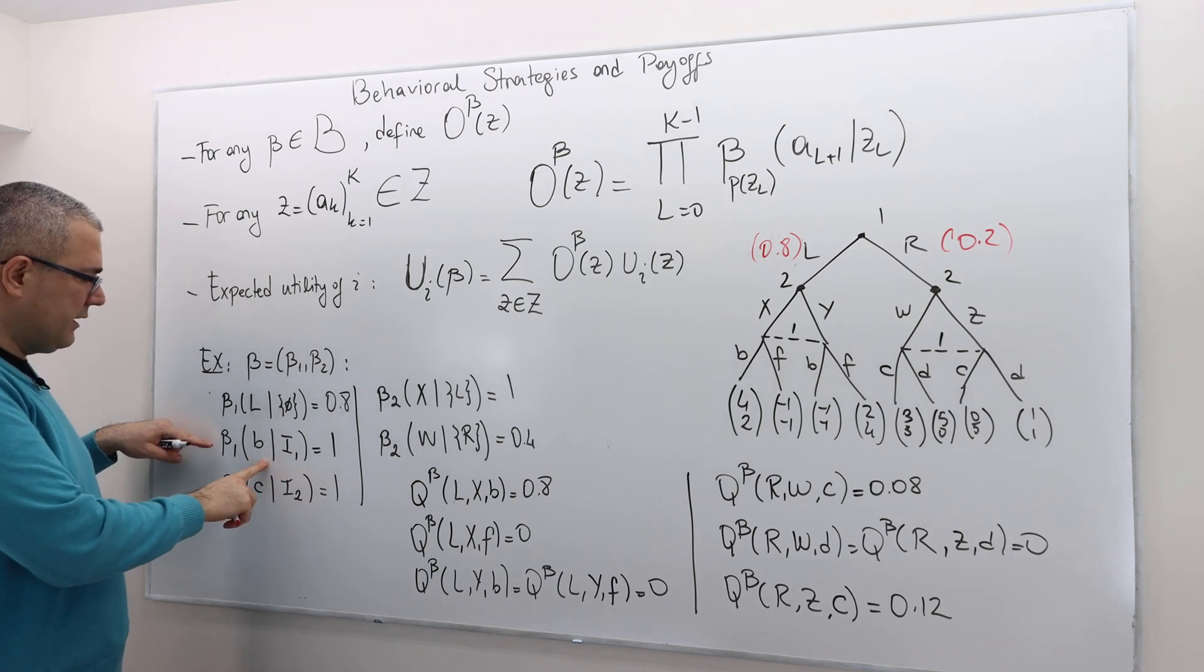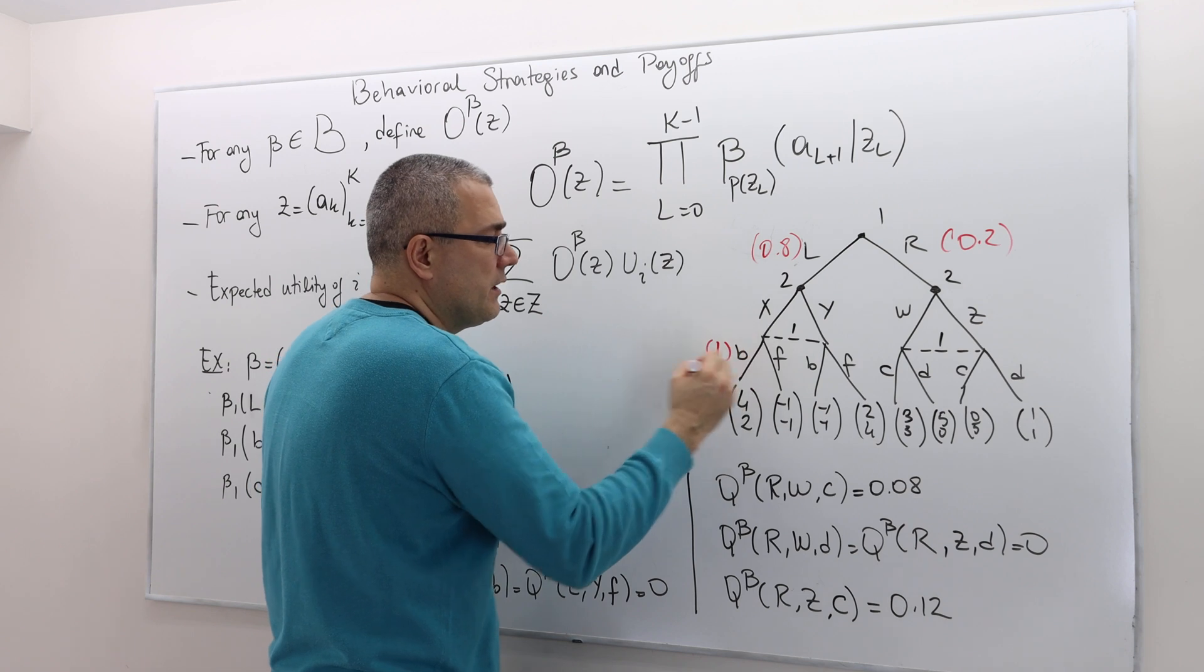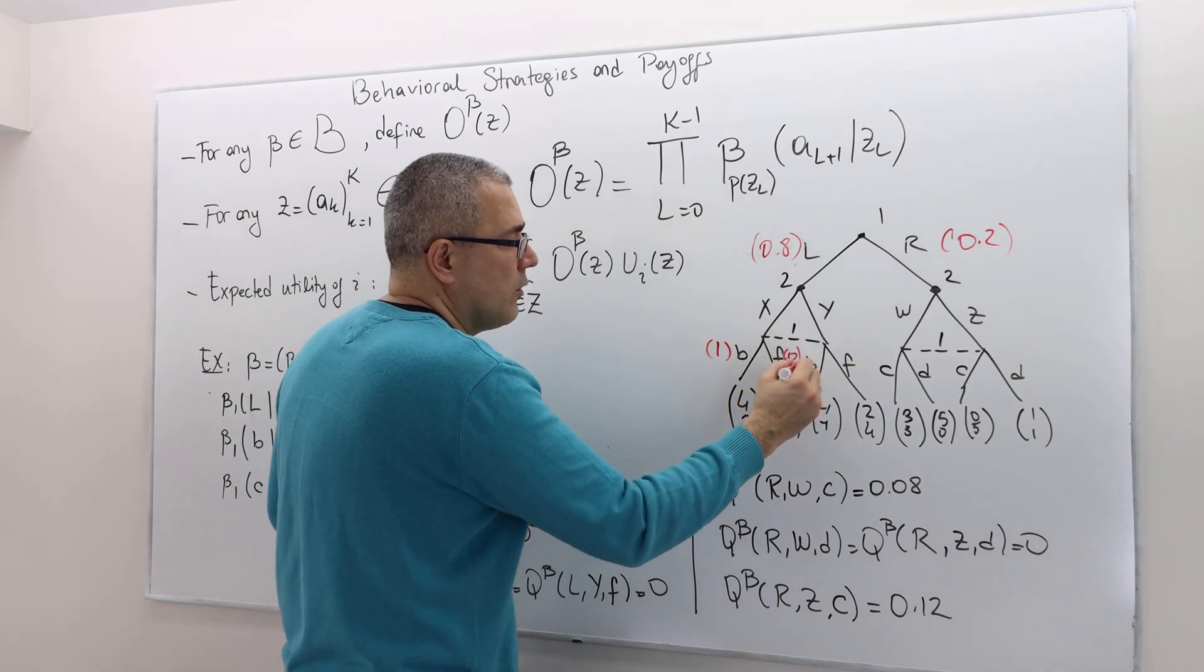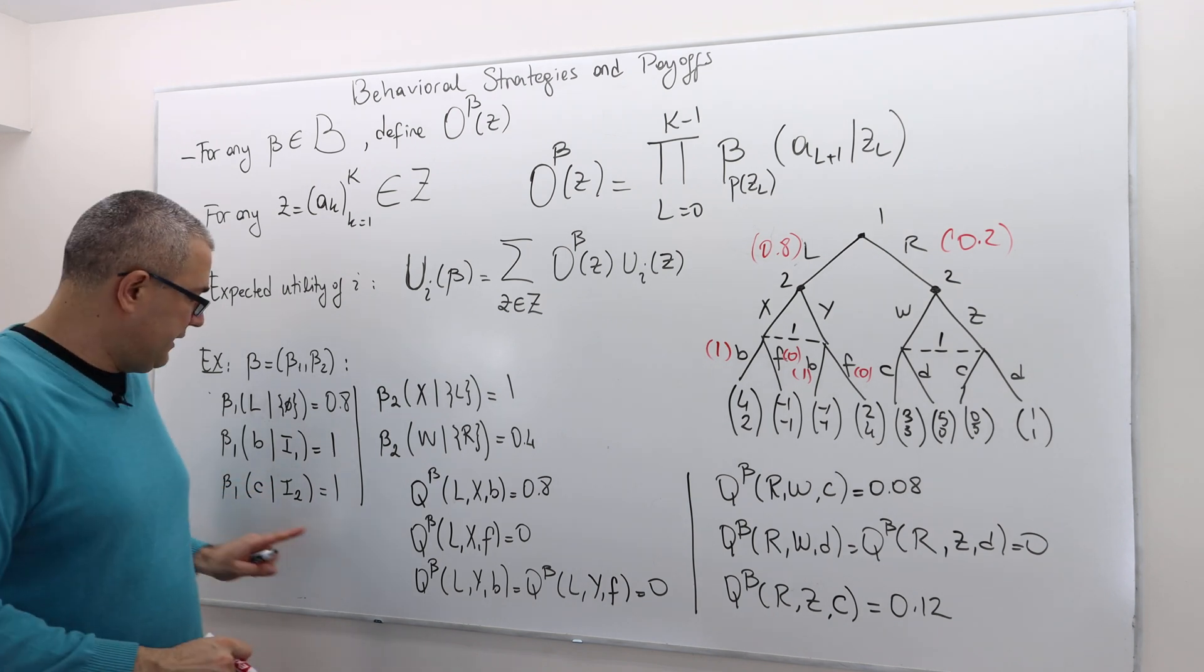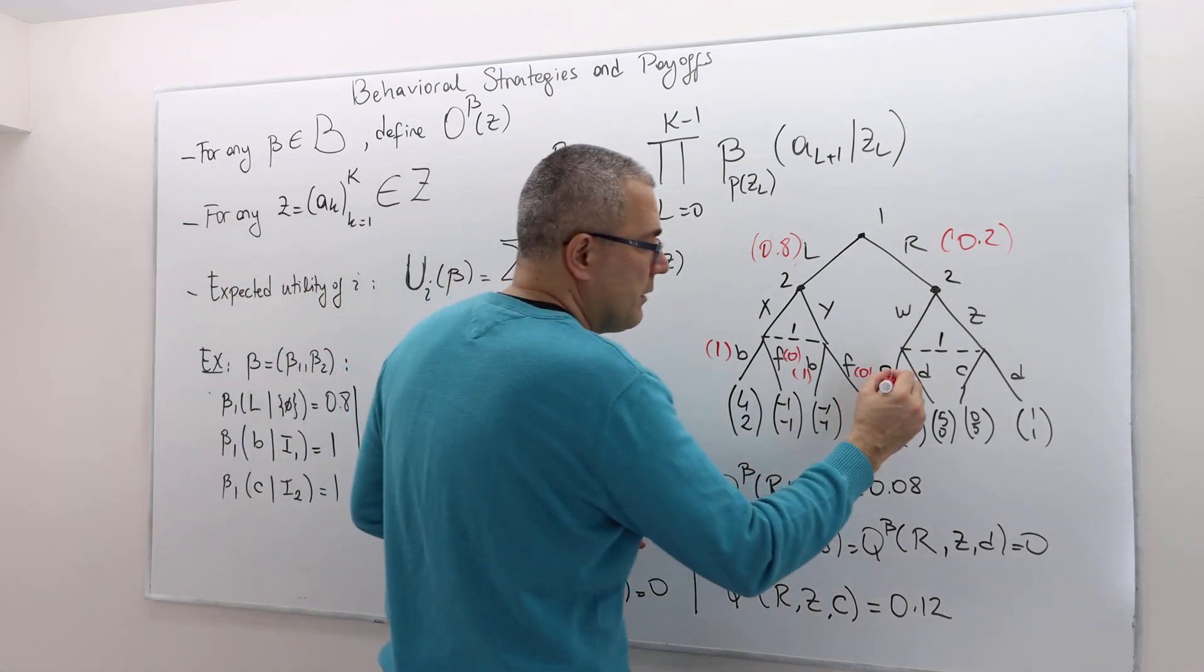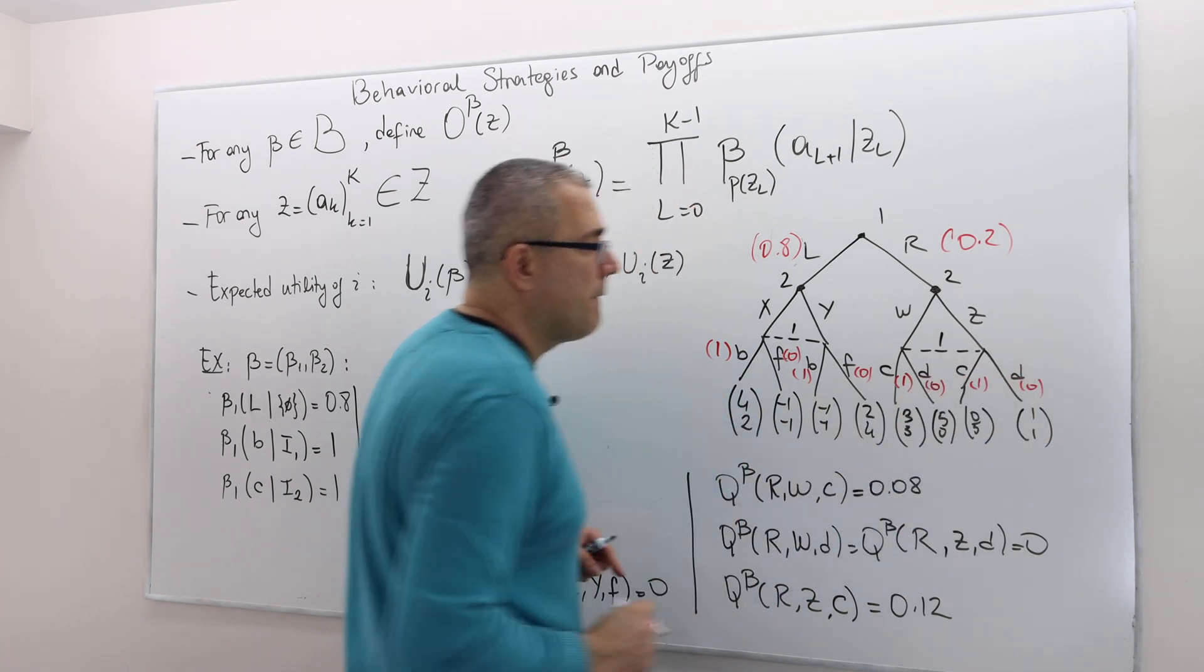Player one is going to play with 0.8 probability L, and therefore 0.2 probability R, because he has only two available actions. In his first info set, he's playing B with probability 1, meaning 1 probability, 0 probability for F. And then in his third info set, he's going to play C with probability 1, so C with 1 probability, D with 0 probability.